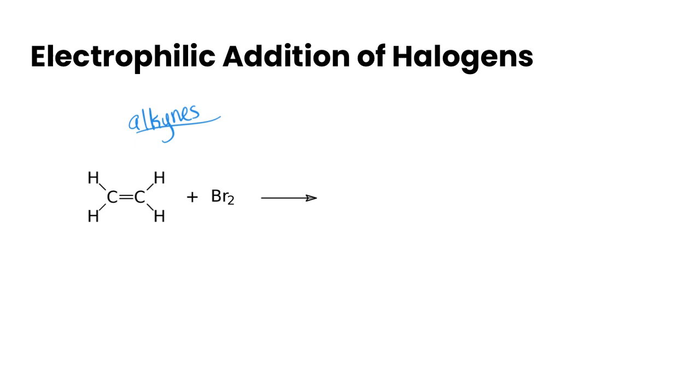In this particular reaction we have our double bond and bromine. What's happening is we're getting a bromine adding to one carbon and the other bromine adding to the other carbon. When that happens, the double bond breaks so we create the alkane here.